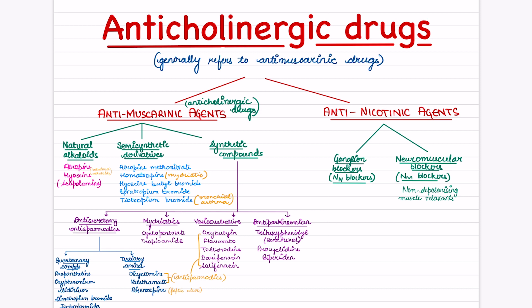Hello everyone, welcome to Medmine. Today we'll be starting with the topic anticholinergic drugs from the unit Autonomic Pharmacology. We learned that cholinergic neurons have two types of receptors: nicotinic and muscarinic. So anticholinergic drugs are also two types - anti-muscarinic agents and anti-nicotinic agents. But we generally call only anti-muscarinic agents as anticholinergic drugs.